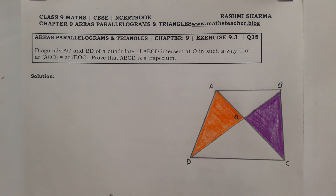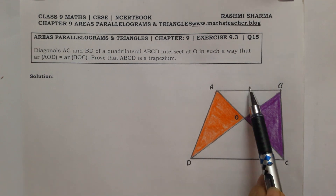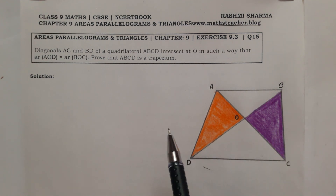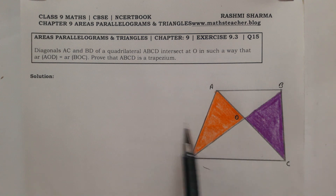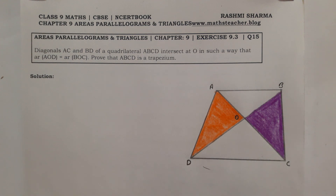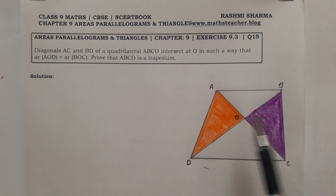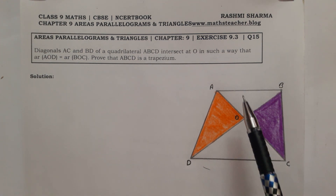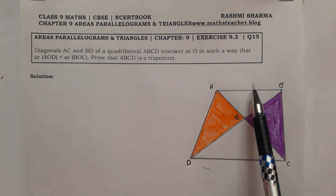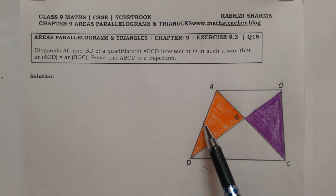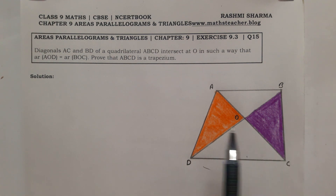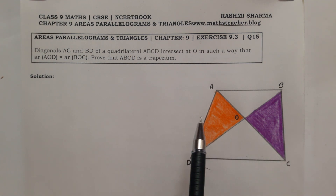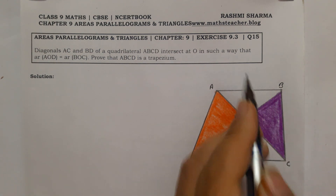To prove this, you need to know the definition of a trapezium. In a trapezium, two sides are parallel and two sides are non-parallel. So to prove ABCD is a trapezium, I have to prove that one pair of opposite sides — either AB and CD, or AD and BC — are parallel.